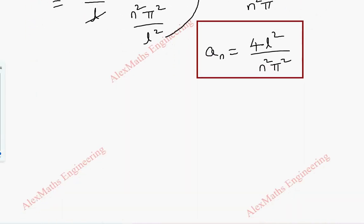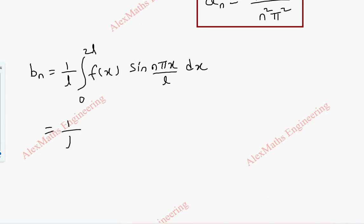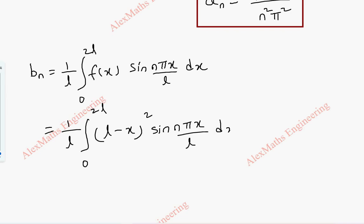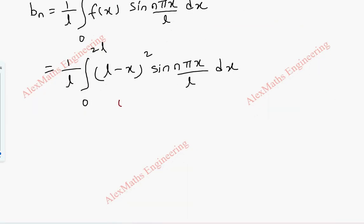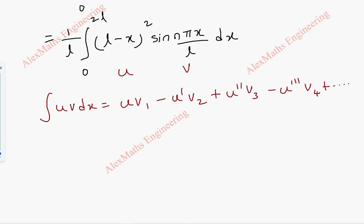Now we have to calculate b_n. The formula for b_n is (1/L) integral from 0 to 2L of f(x) sin(nπx/L) dx. This is (1/L) integral from 0 to 2L of (L − x)² sin(nπx/L) dx. Again we are going to use Bernoulli's formula, with u = (L − x)² and v = sin(nπx/L).